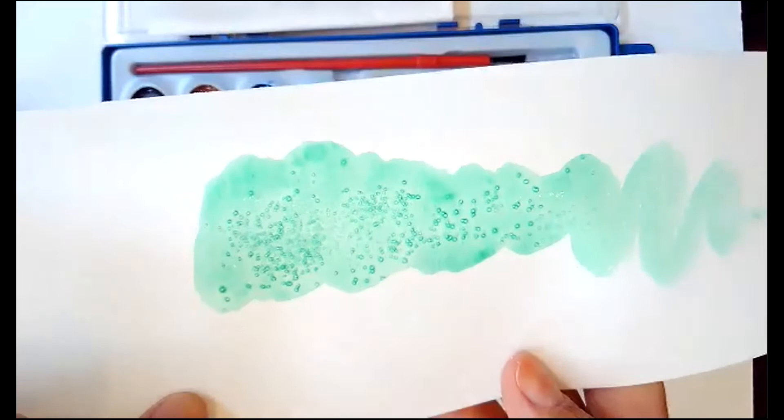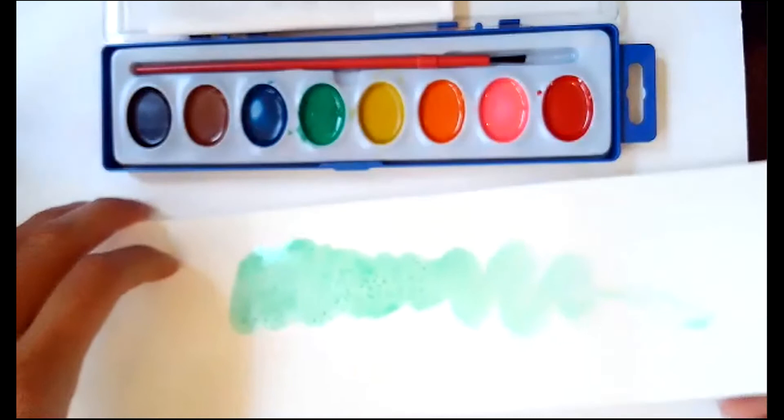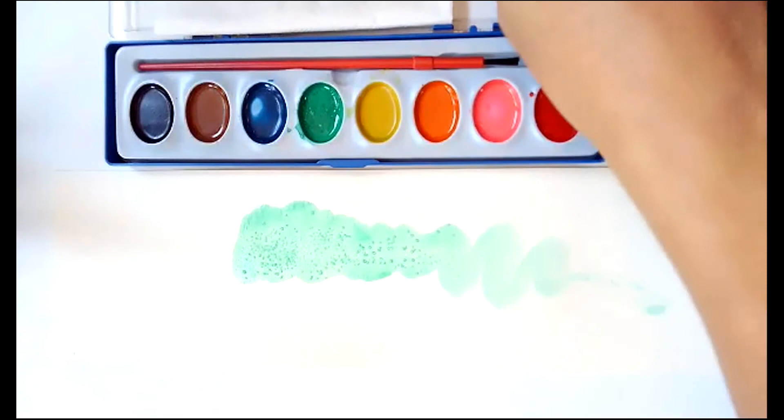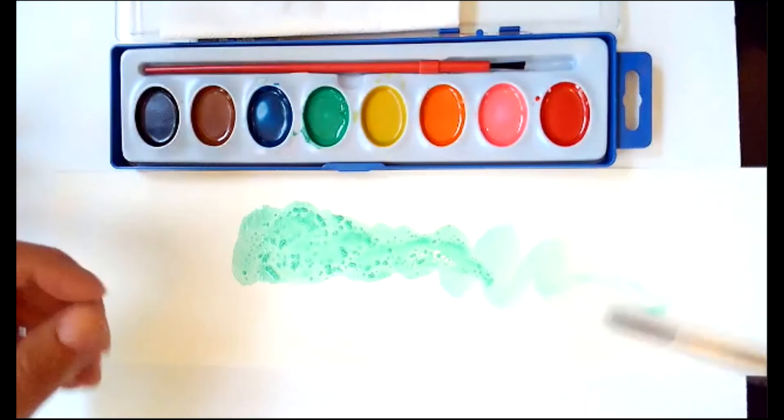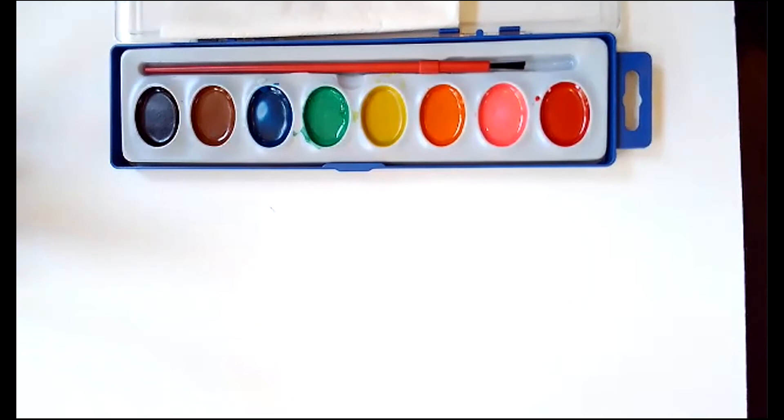And you have this really fun kind of crystal-y polka dot design kind of going there and you can apply this to a much larger area. You can even go back in and add a little bit more and kind of manipulate the salt crystals a little bit or you can just leave them on the paper as they fall. So that's technique number one.